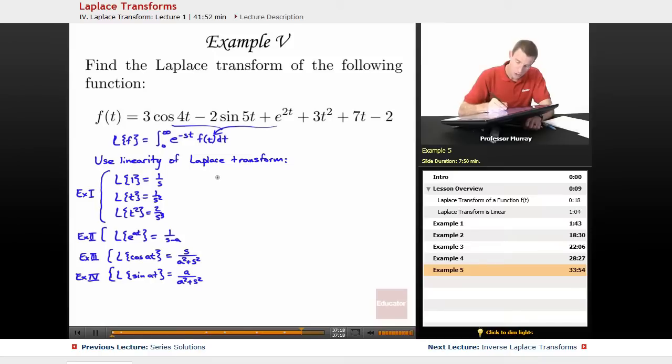So the Laplace transform of f, from the 3 cosine of 4t, I'm going to get 3 times s over 16 plus s squared because the a is 4 there.